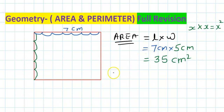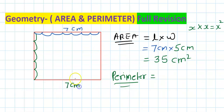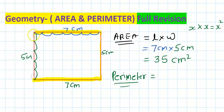Now what is the perimeter here? Perimeter means the sum of all the sides. So if this side is 7, then the opposite side is also 7. Opposite sides of a rectangle are equal. And if this side is 5, then the other side is also 5. So perimeter means you need to add all these sides: side 1, side 2, side 3, and side 4. So 7 plus 5...